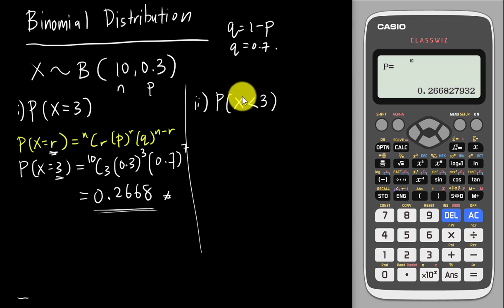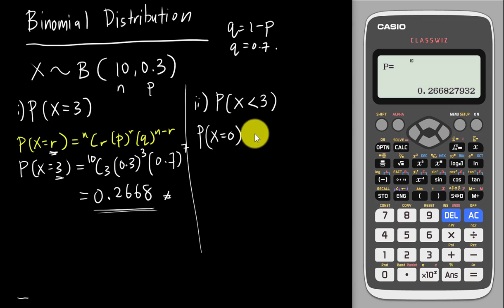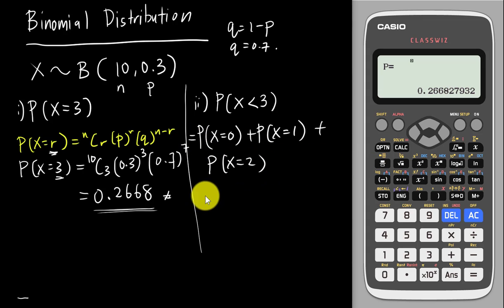The second example is more complicated: finding P(X < 3). You need to list all values less than 3 — that's x = 0, x = 1, and x = 2. Since less than 3 does not include 3, I don't add x = 3. I need to apply the formula for each of these values.